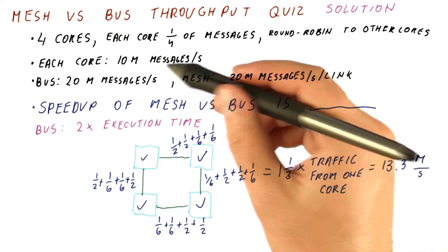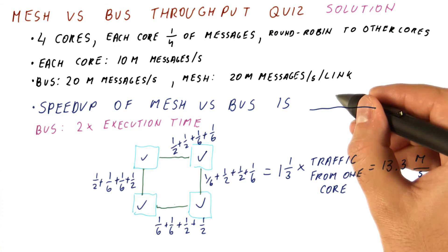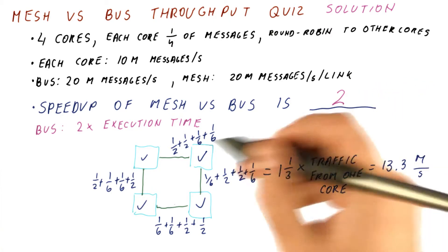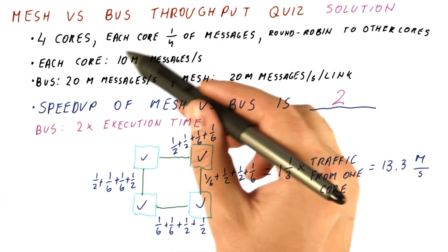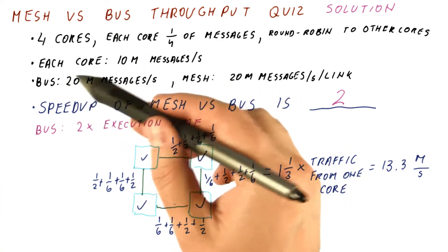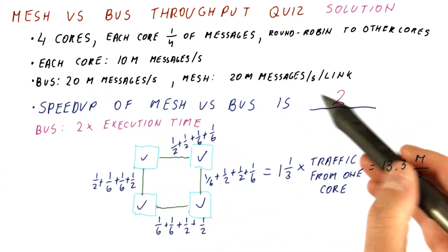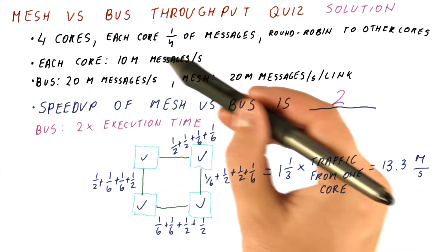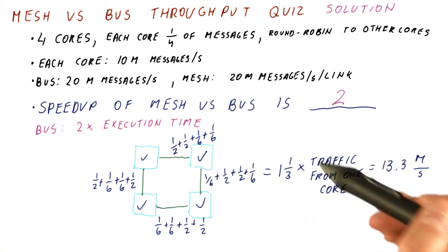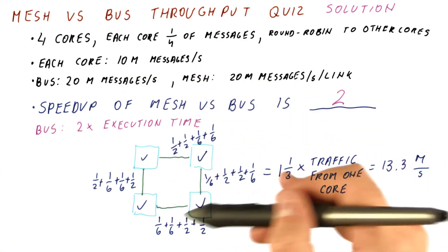So the mesh doesn't slow down the processors. So really the speedup of using the mesh versus the bus is two. Because the bus requires the cores to slow down so that it can support the traffic that they're generating. While the mesh allows the cores to proceed at full speed at 10 million messages per second and still has some traffic left over.